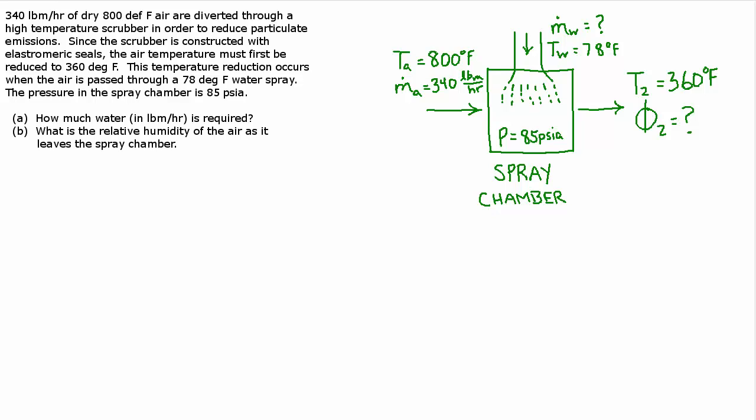So I've drawn a little picture on the right of what's going on. We have dry air entering at a known mass flow rate and a known temperature, and then it's being sprayed with water. We don't know the mass flow rate of water. That's the first thing we want to find out. And we do know the temperature of the water and we know the pressure of the spray chamber. And then coming out, we have this air which is now cooled off by having evaporated the water in that spray. Now it's 360 degrees Fahrenheit, and they want us to find the relative humidity.